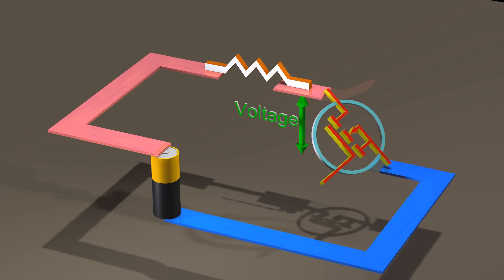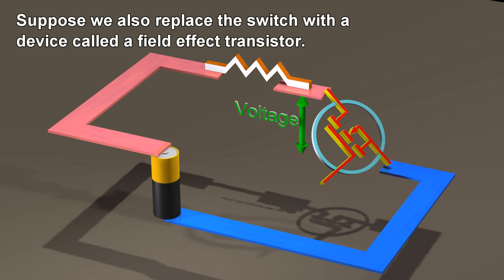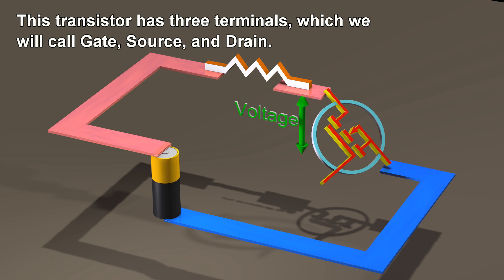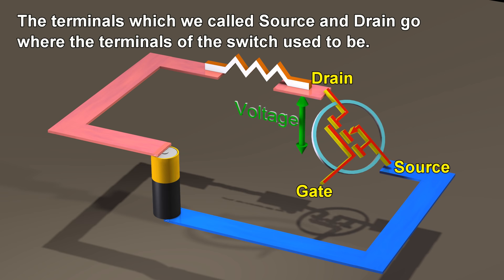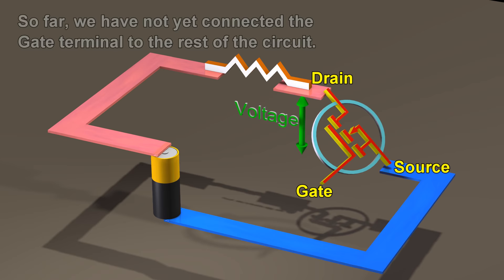Suppose we also replace the switch with a device called a field effect transistor. This transistor has three terminals, which we will call gate, source, and drain. The terminals which we called source and drain go where the terminals of the switch used to be. So far, we have not yet connected the gate terminal to the rest of the circuit.